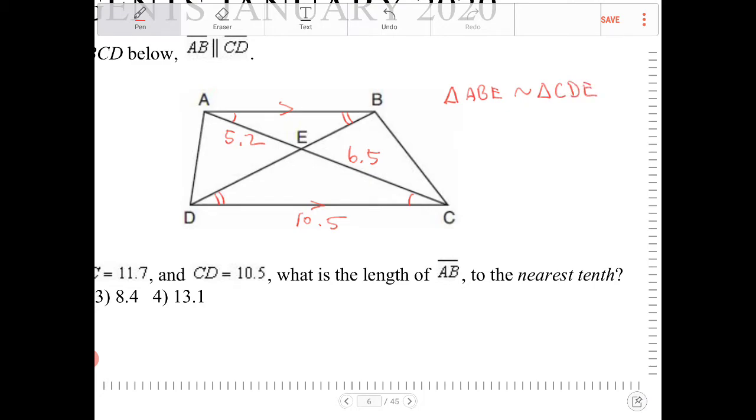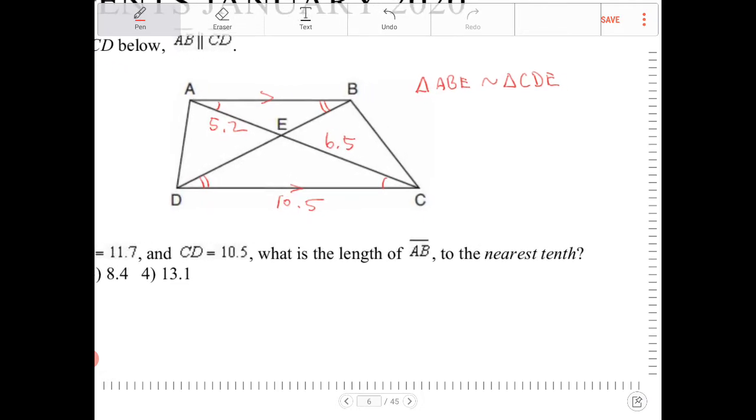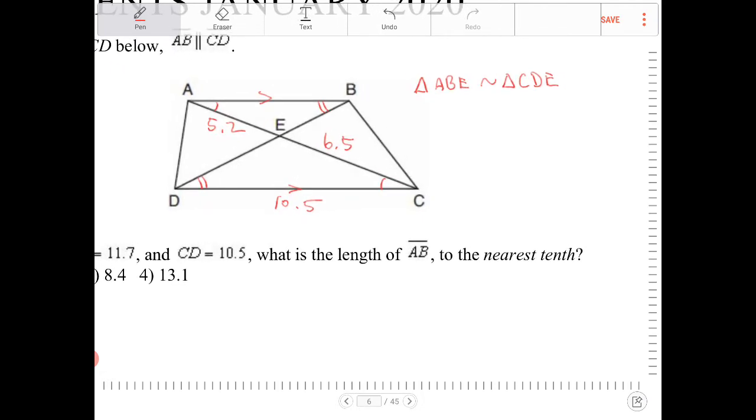And again, the way in which you're writing this out in notation, the order of the letters matters greatly, because this is telling us that A is congruent to C, B is congruent to D, E is congruent to E. All right, so why is this important? Well, then we can use the other property involving similar triangles, which is corresponding sides of similar triangles are proportional.